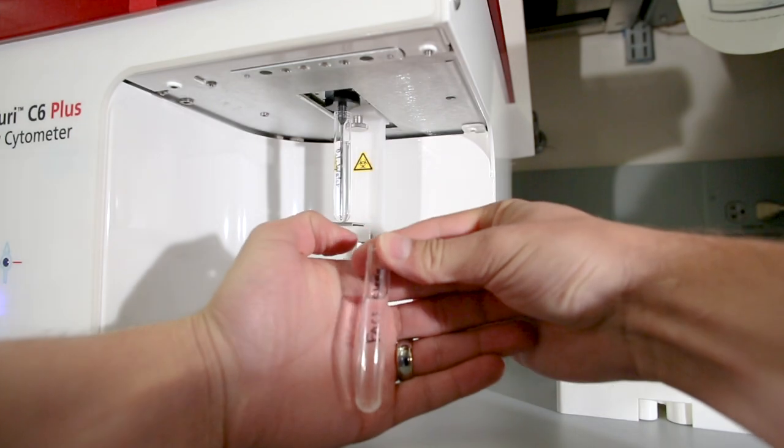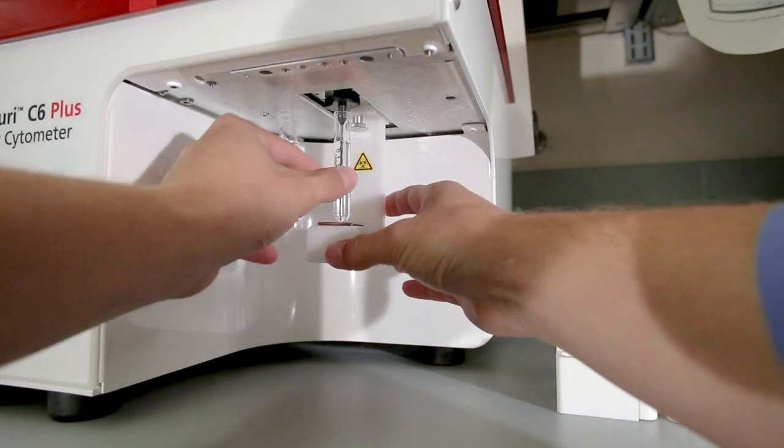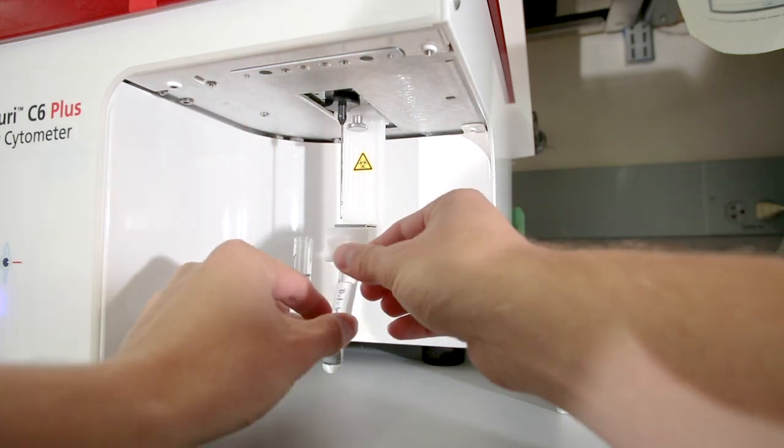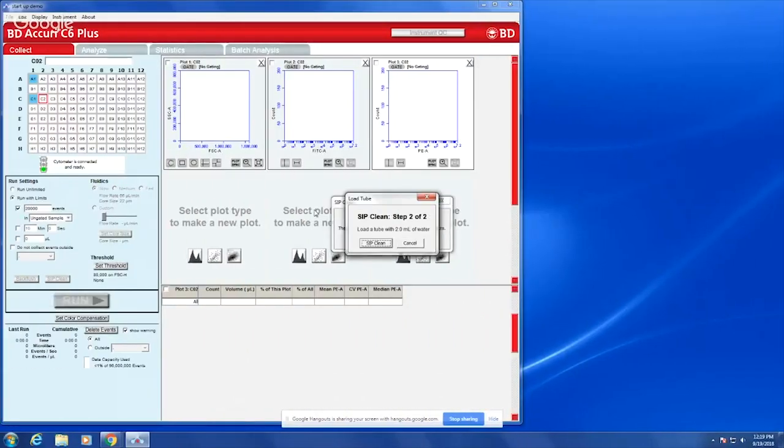The process for shutting down the machine is similar to the flush. Put at least two milliliters of Fax Clean solution to run in a clean tube. Run the sip clean function as you did earlier.